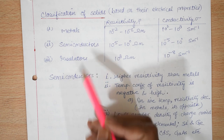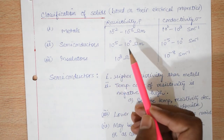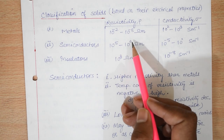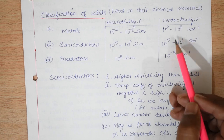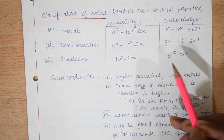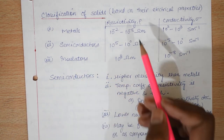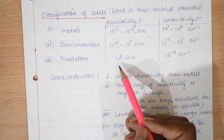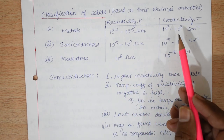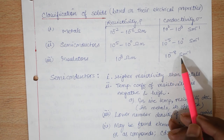For semiconductors, the resistivity is slightly greater than that of metals — it is 10 to the power 5 to 10 to the power 0, and conductivity is lesser, at 10 to the power minus 5 to 10 to the power 0 siemens per meter. For insulators, their resistivity is very high, of the order of 10 to the power 8 and beyond, and their conductivity is minimum, at 10 to the power minus 8 siemens per meter.